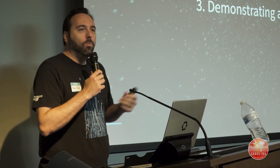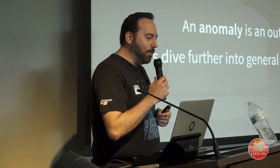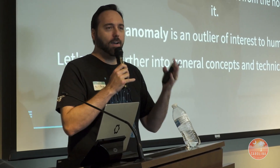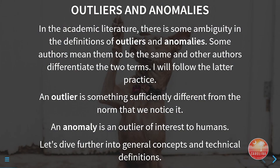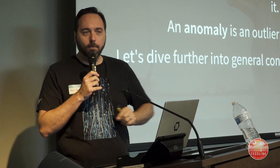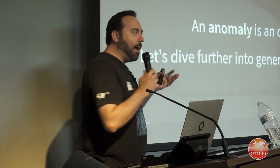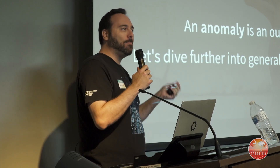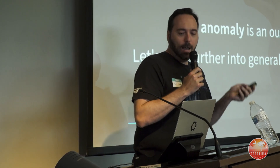So first up, what exactly is an anomaly? In the academic literature, there are usually two realms of thought around what defines outliers and anomalies. One group says they are exactly the same thing; another group says they are very different things. I belong to group number two. Outliers are things that are not in the norm — they do not fit an expected pattern. Anomalies are outliers which are interesting to people. Outliers just happen; when they are interesting, they become anomalies.